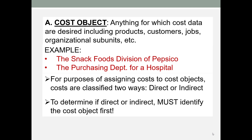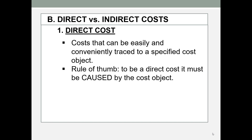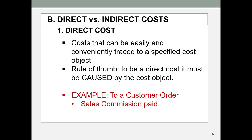You first must identify the cost object before you can classify a cost as direct or indirect. A direct cost is one that can be easily and conveniently traced to a specific cost object. In other words, what you want to think about is: does this cost object cause this cost to be incurred? For example, with a customer order as the cost object, sales commissions paid or direct material used — a company would be able to trace the sales commission paid for a specific customer order fairly easily to that customer order.